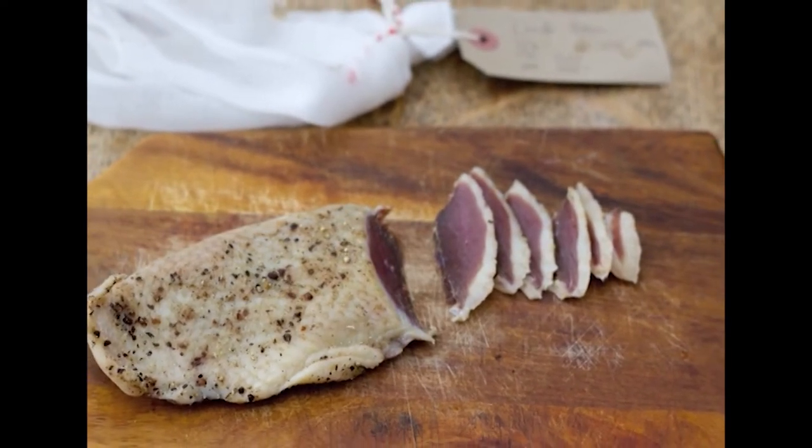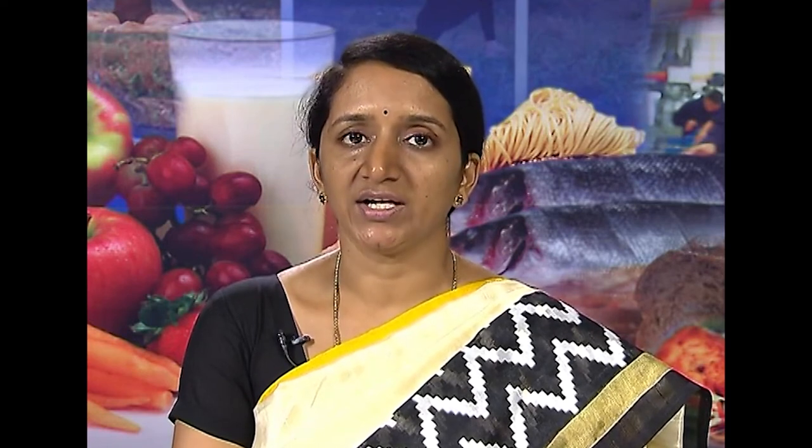These days, mild curing of meat products is practiced mainly for specific flavor and color development, with the preservative effects of curing ingredients as an added advantage. Sodium chloride, sodium nitrite, and sugar are the main curing ingredients. Nitrates and nitrites at permitted levels of 500 ppm and 200 ppm respectively act as preservatives by inhibiting the growth of bacteria, especially Clostridium botulinum. These chemicals also retard the development of rancidity.